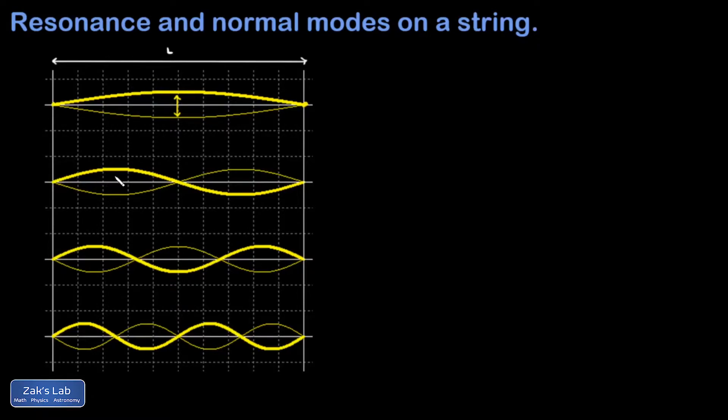When I sweep up to a higher frequency, therefore a shorter wavelength and hit the next special wavelength, I'll see two of these large amplitude places and those are moving opposite directions all the time. The string flops that way and then it reverses and flops this way.